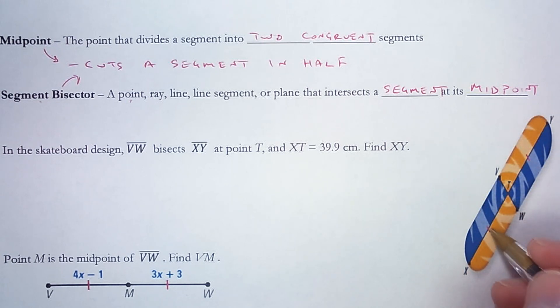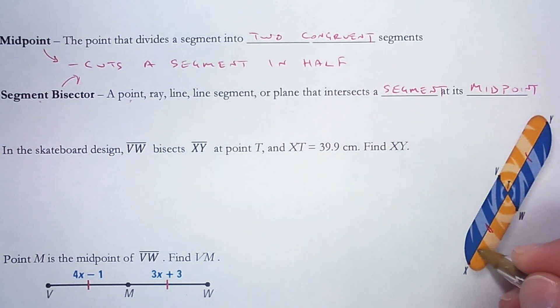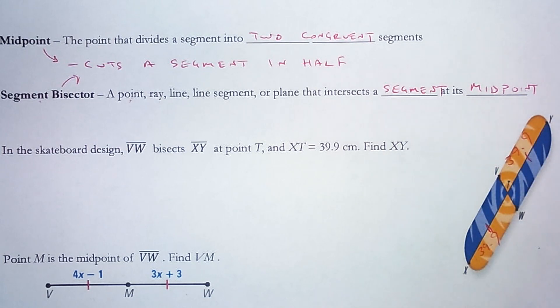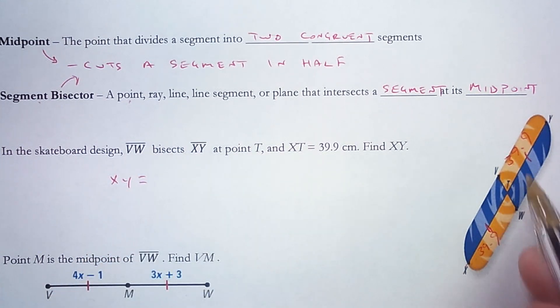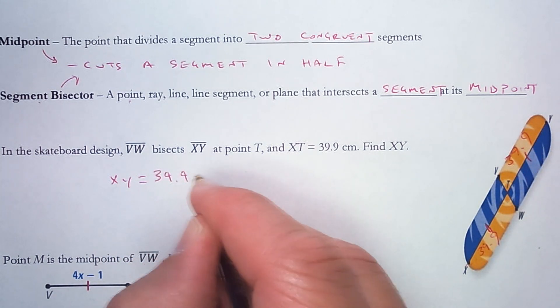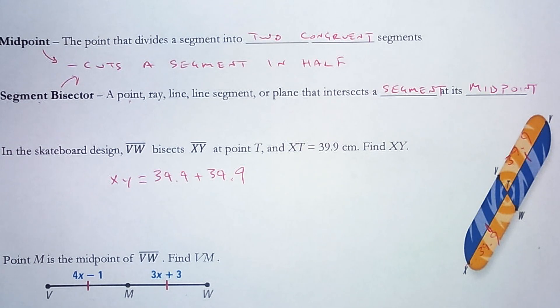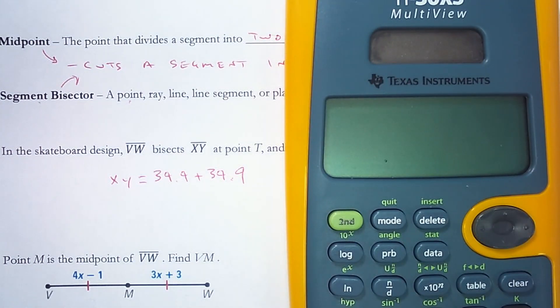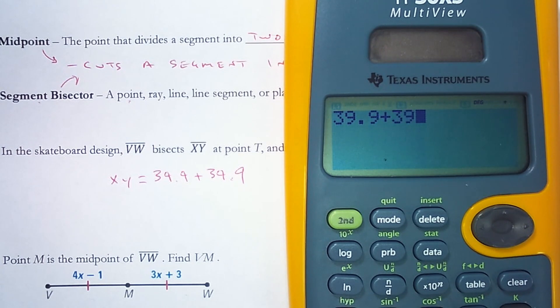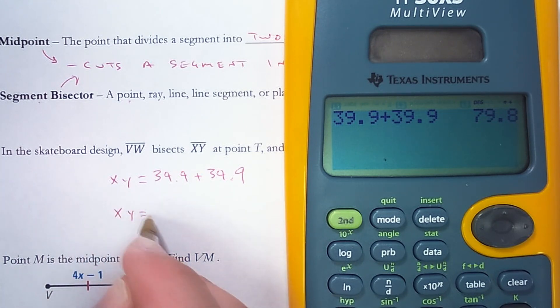So XT is 39.9 centimeters. Well that tells me that YT is also 39.9 centimeters. Find the length of XY. So XY, segment addition postulate says I can add those 39.9 plus 39.9. So I'll get out my calculator. 39.9 plus 39.9 is 79.8. So XY has a length of 79.8 centimeters.